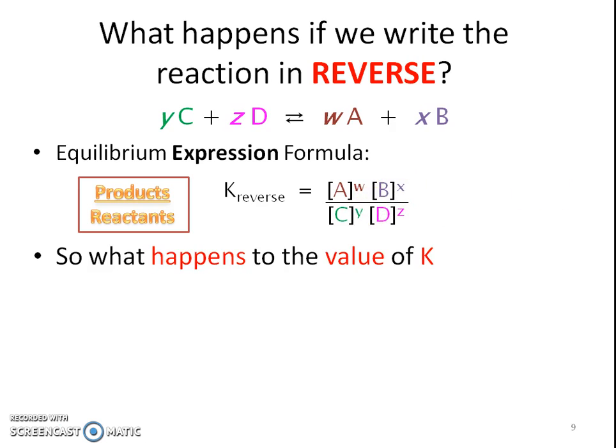But if that happens, then what happens to that K value, the actual value, the amount that we get for K? Well, it's going to be the inverse. So it's going to be one over.